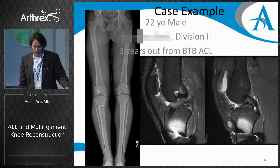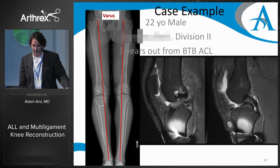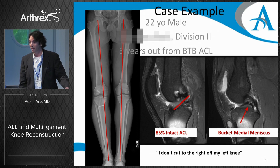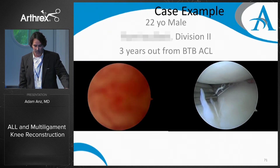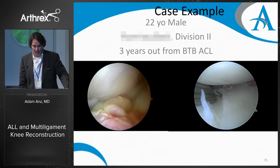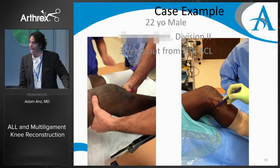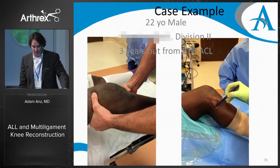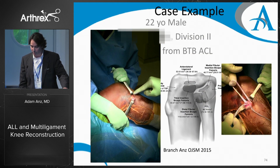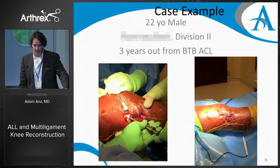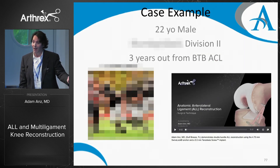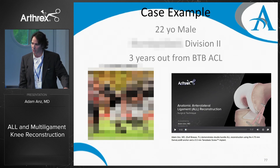Here's a case example: a 22-year-old about to start his senior year at a Division II program, three years out from a BTB ACL reconstruction, always telling me he couldn't cut right, with a bucket-handle meniscus tear. Four months from finishing his senior year and hoping for a pro contract. We did a meniscus inside-out repair — his graft was 85% intact — so we microfractured the notch and added an ALL laterally. He returned for his senior year, played the whole season, and said, 'Now I can cut both ways. The trainers noticed I was always cutting to the right before.'